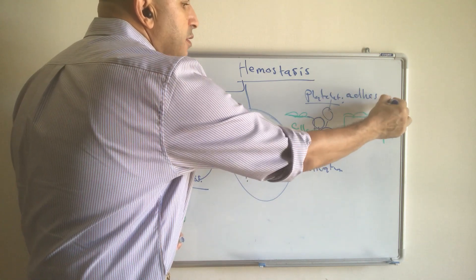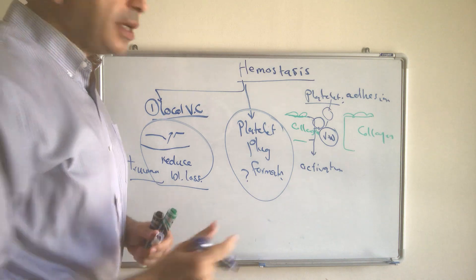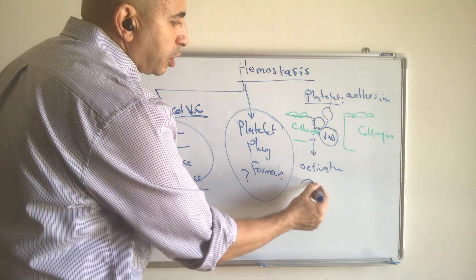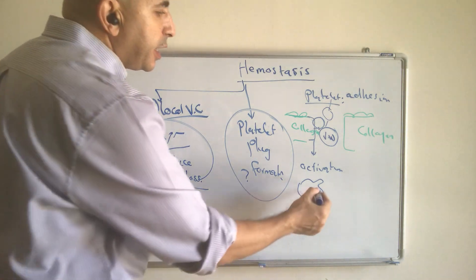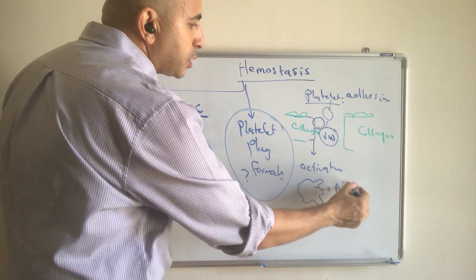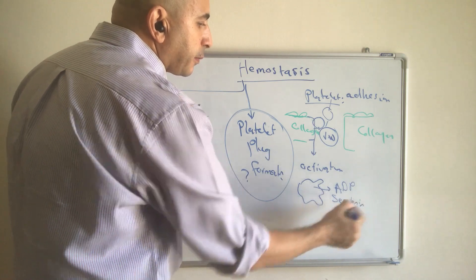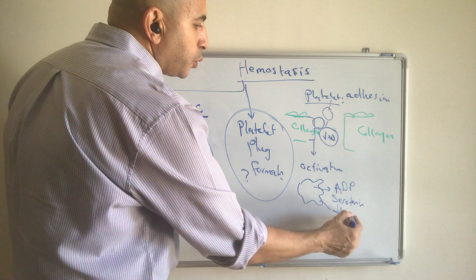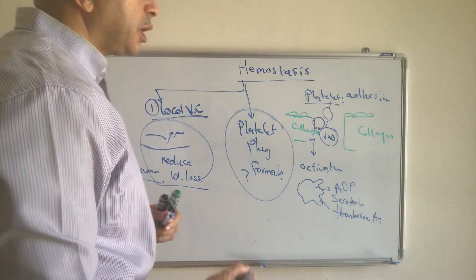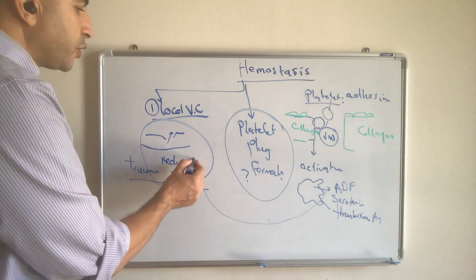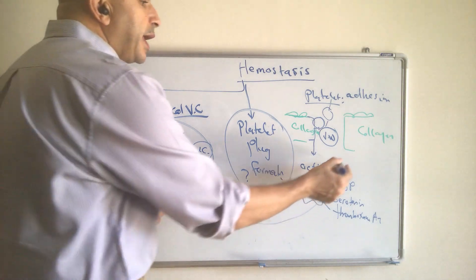The second step is platelet activation. During platelet activation, there is formation of finger-like processes, a change in shape, and release of the contents of the granules — including ADP, serotonin, and thromboxane A2.